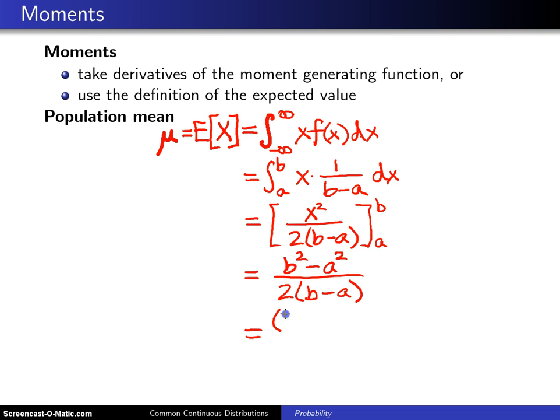And you recognize that numerator is the difference of two squares. So that can be written as b minus a times b plus a. And here the two b minus a's will cancel, and you will get b plus a divided by 2, and usually that is written as a plus b divided by 2.